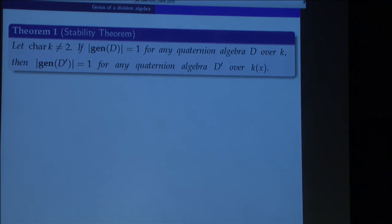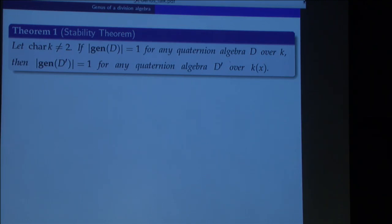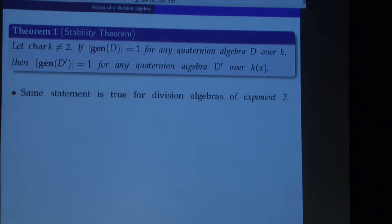Speaking about fields more general than number fields, first we have what we call the stability result. If we have a field of characteristic not two, and we know that the genus is trivial for every quaternion algebra over k, then the same property holds for the field of rational functions over k — that sort of generalizes Saltman's result. The same statement remains valid for algebras of exponent two in the Brauer group: if every algebra of exponent two is uniquely determined by its maximal subfields over k, then the same property transfers to the field of rational functions over k.